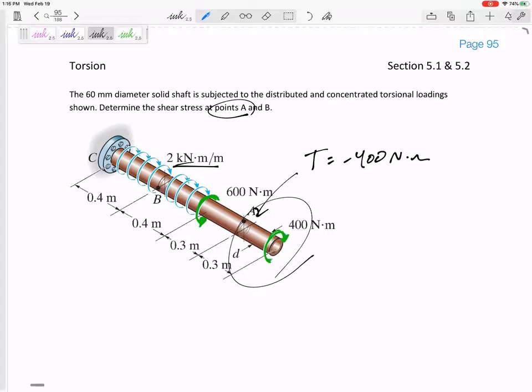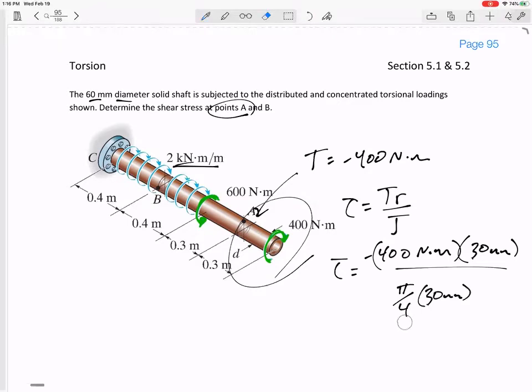So the shear stress tau would be TR over J, would be, I'll put a negative 400 newton meters. A looks to be on the outside edge. If it's a 60 millimeter diameter, 30 millimeters is its R. Pi by 4, 30. No, no, no, no. Oh man. No wonder y'all make that mistake so much on the test. Pi by 2. This J is pi by 2 R to the 4th. I did that on purpose just to show you. Don't do that.